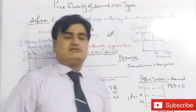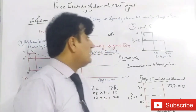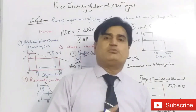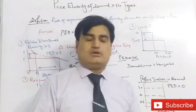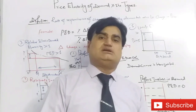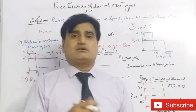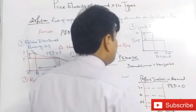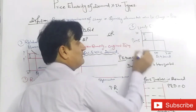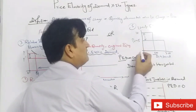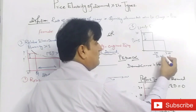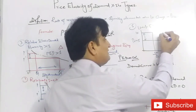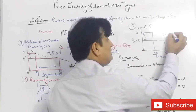The fifth case is Unit Elastic Demand. In this case, the quantity demanded changes in the same proportion as the change in price. For example, when the price decreases by 10 percent, the quantity demanded increases by 10 percent. For instance, when the price is 10, the quantity demanded is 100. When the price is 5, the quantity demanded increases from 100 to 200 — it doubles. This is Unit Elastic Demand, where the price elasticity of demand is equal to 1.